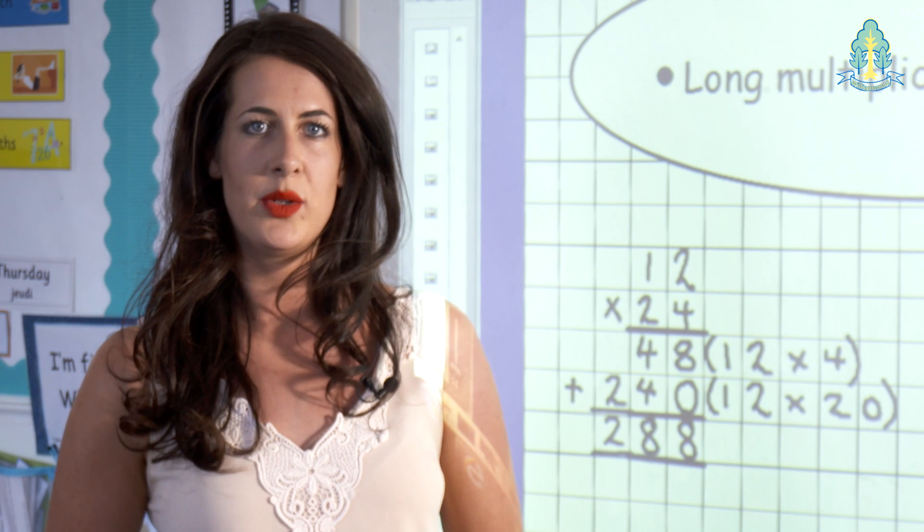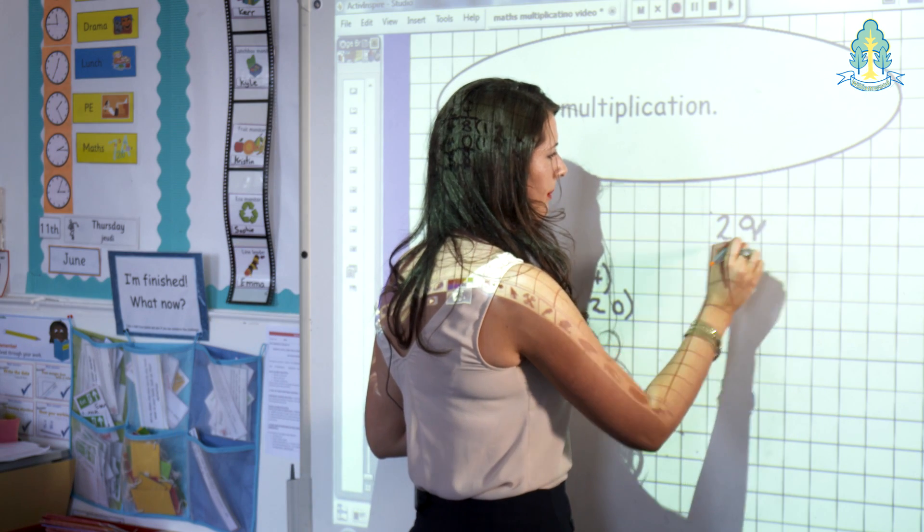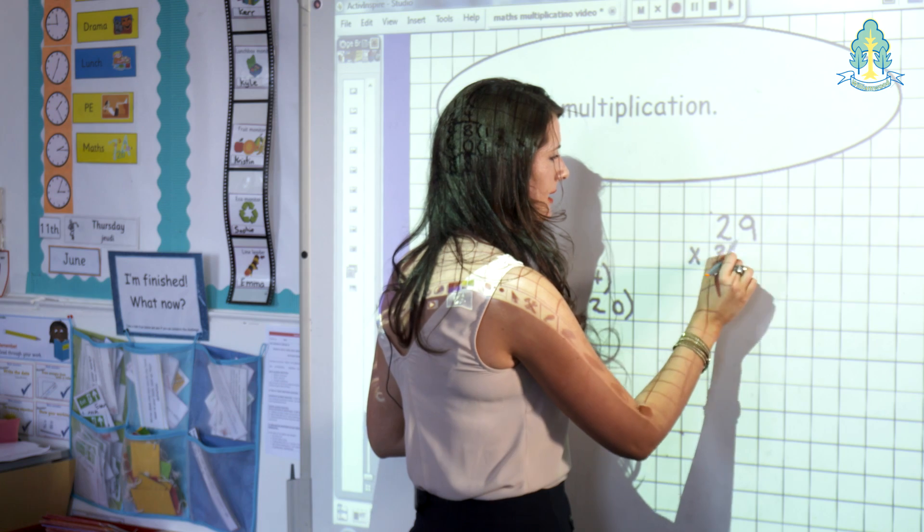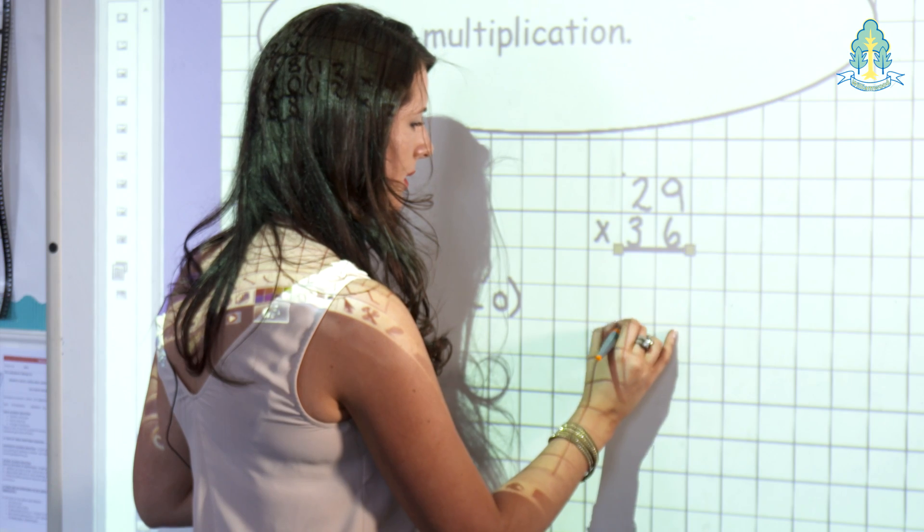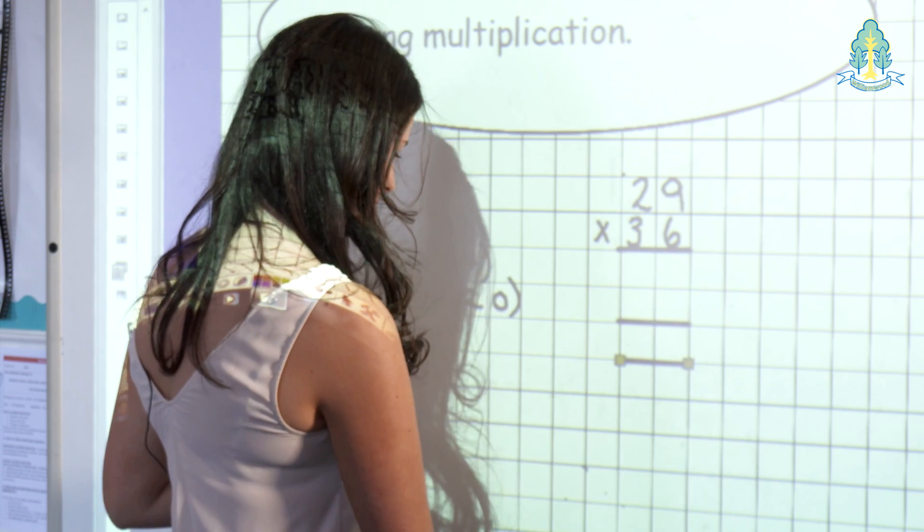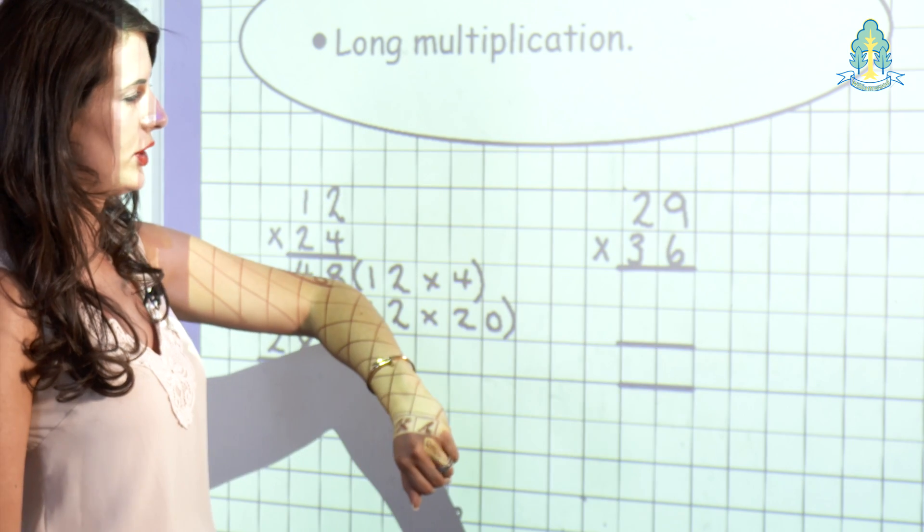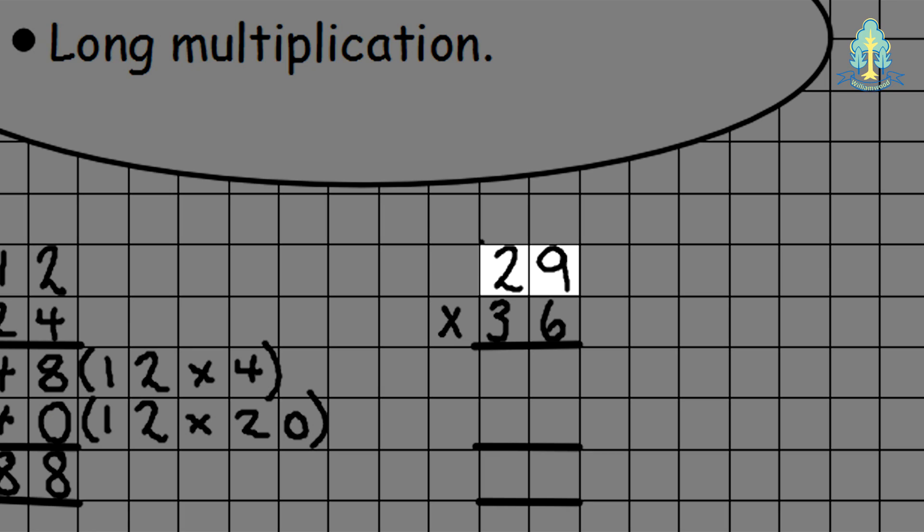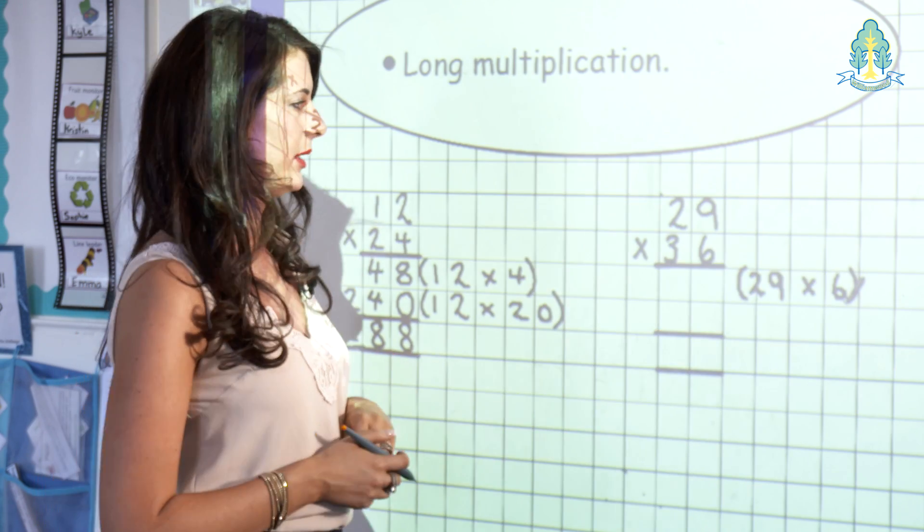Now let's look at long multiplication where carrying is involved, with the example of 29 multiplied by 36. As previously, we put down our lines. And we'll now start with 29, and we look at our 6 in the units column from 36. So really the first calculation is 29 multiplied by 6. I'll write this down to remind us what we're doing. When the children are carrying out their long multiplication, I would expect them not to write this at the side.